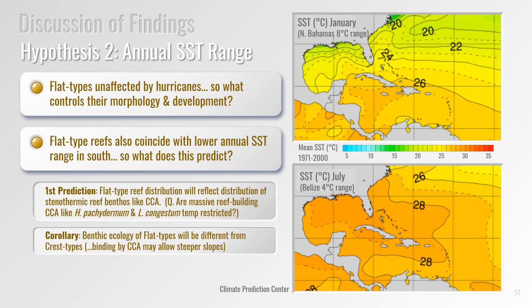What about flat-type reefs? They're not affected by hurricanes, so what controls their development? Sea surface temperature data shows the southern Caribbean has a smaller annual temperature range than the north by about 4 degrees. A competing hypothesis is that flat-type reefs require a reduced temperature range to develop — perhaps their development is controlled by stenothermic reef benthos like crustose coralline algae, which seem to be less abundant in the north where the annual temperature range is much larger. These differences might produce reefs with a different morphology, since crustose corallines play an important role in binding the reef together and might facilitate vertical growth by stabilizing and producing steeper slopes. A corollary is that the benthic ecology of flat-type and crest-type reefs will be different, which we can test by including these data in the analysis.